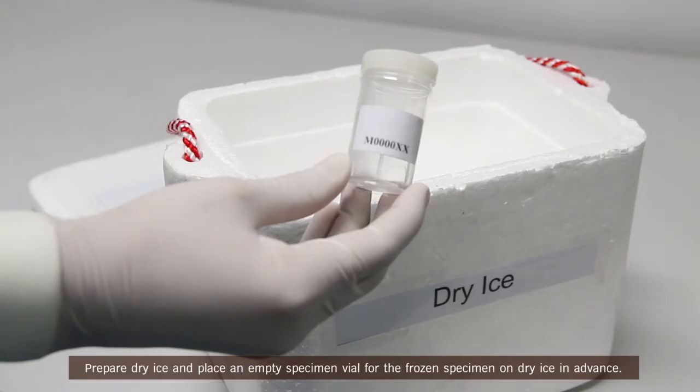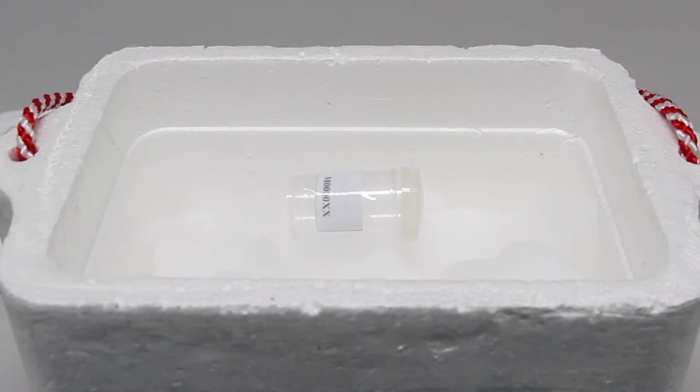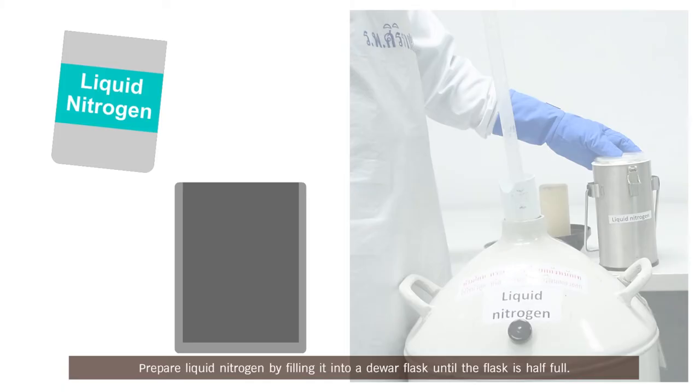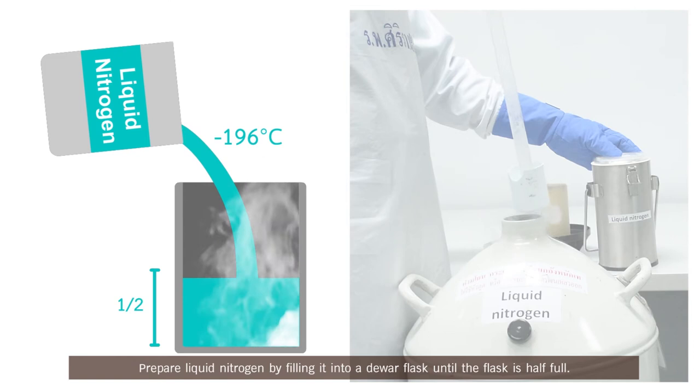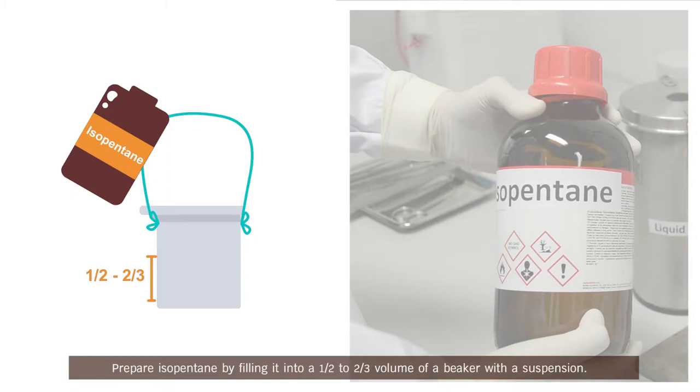Prepare dry ice and place an empty specimen vial for the frozen specimen on dry ice in advance. Prepare liquid nitrogen by filling it into a dewar flask until the flask is half full. Prepare isopentane by filling it into a half or two-third volume of a beaker.